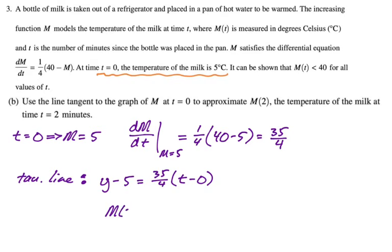And we are supposed to approximate the temperature. So I'm going to say that m of 2 is approximately 5 plus 35 over 4 times 2, or you could say 2 minus 0. I'm not going to simplify it. Sometimes when I simplify, I make mistakes. I don't want to make a mistake. You're not required to simplify that on the exam. Let's just leave it and move on. It's hard for me to do that. That's why I keep saying it, but I'm going to do it. I'm leaving it. Next part.